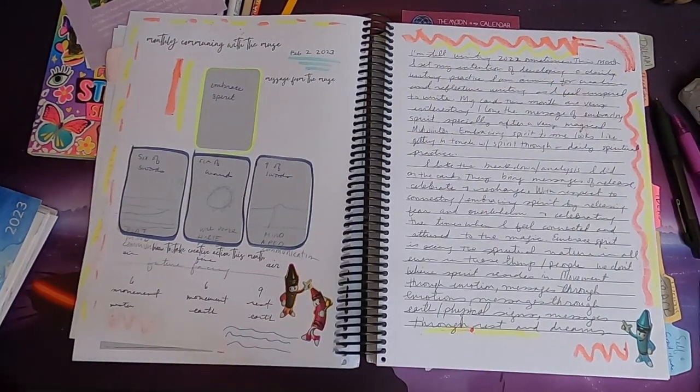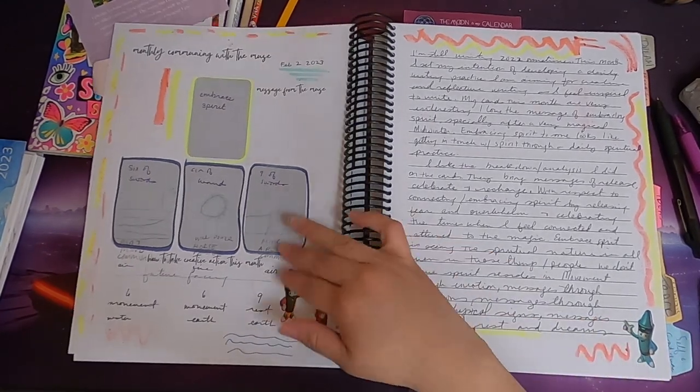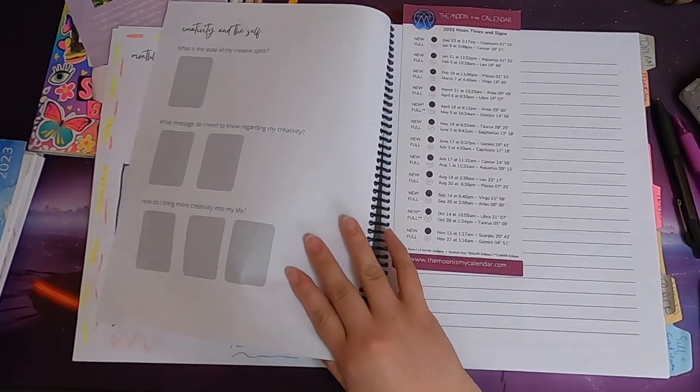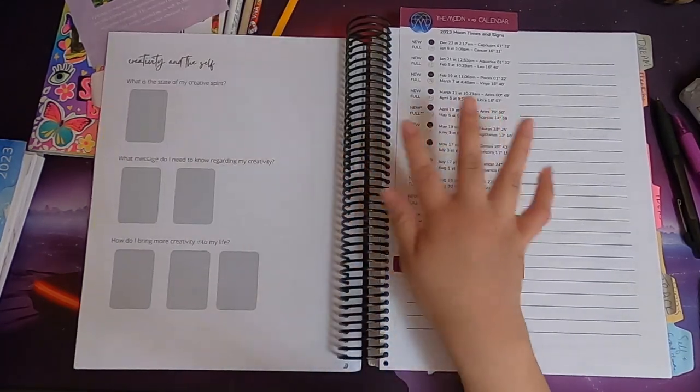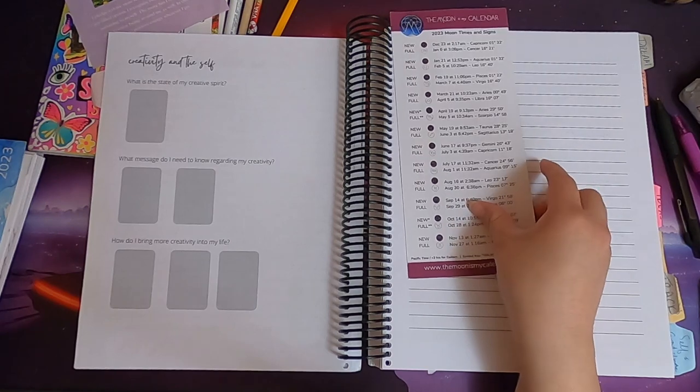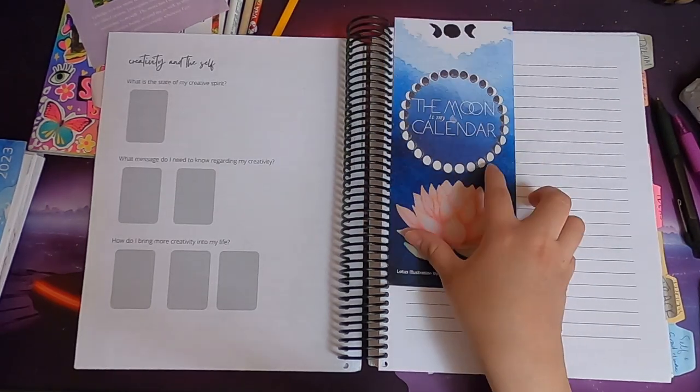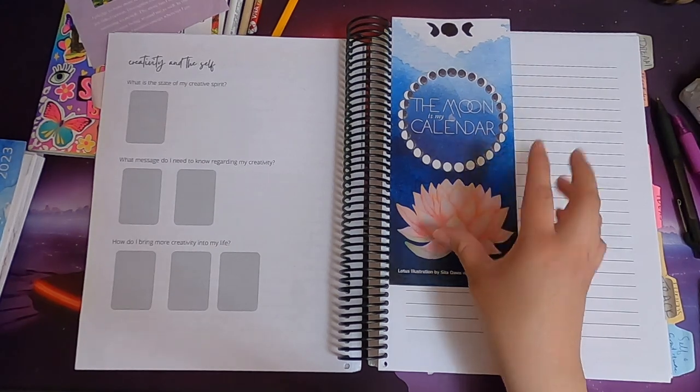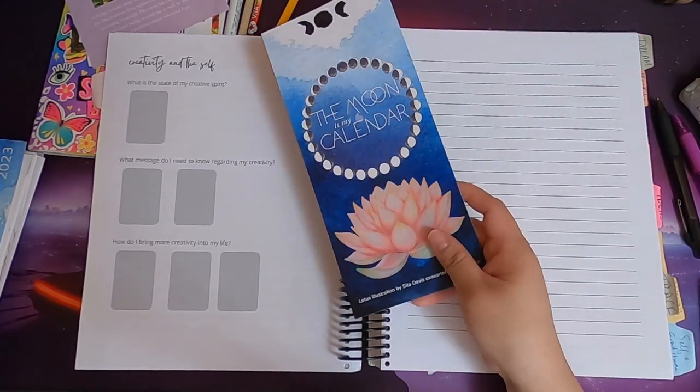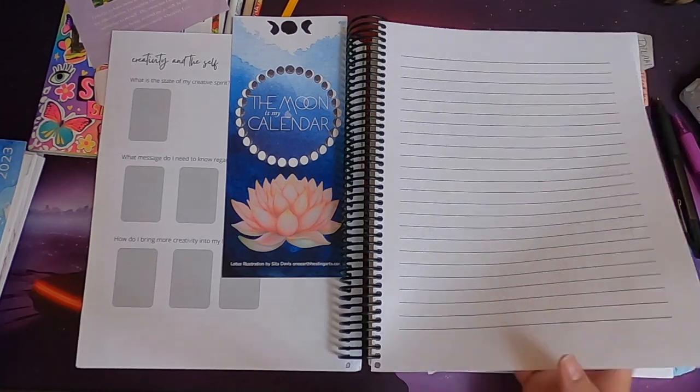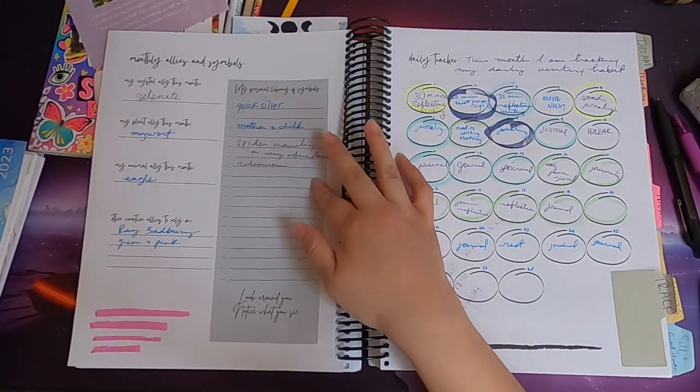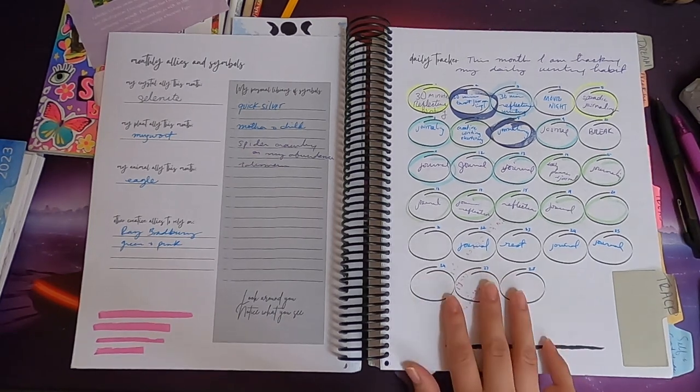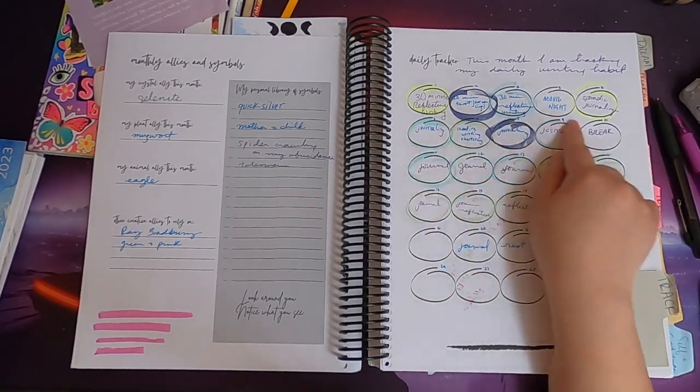Then we move into the spread, the communing with the muse spread. I pasted some Crayola stickers that I had laying around. I haven't done the creativity and the self spread. In February I didn't feel very called to work with my cards so I'm going to save it for later. I have this bookmark from the moon as my calendar, a different journal that I use that I'll talk about later.